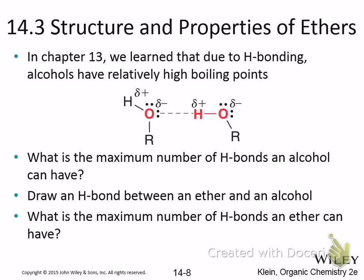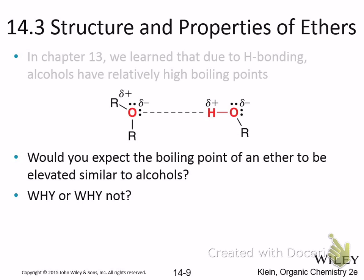In terms of intermolecular forces, alcohols have very high boiling points. Water has a really high boiling point relative to its molecular weight simply because they can hydrogen bond. Ethers can be hydrogen bonded too — they're polar — but can't hydrogen bond themselves because they don't have a hydrogen on them. The maximum number of hydrogen bonds an alcohol can have is 1. Ethers can't form any, but they can accept hydrogen bonds. So as far as boiling points go, alkanes are going to have the lowest, alcohols would be the highest, and ethers are in the middle.